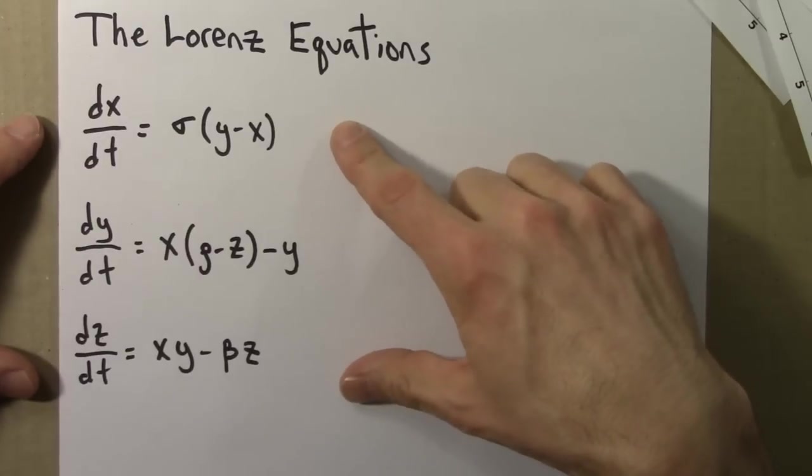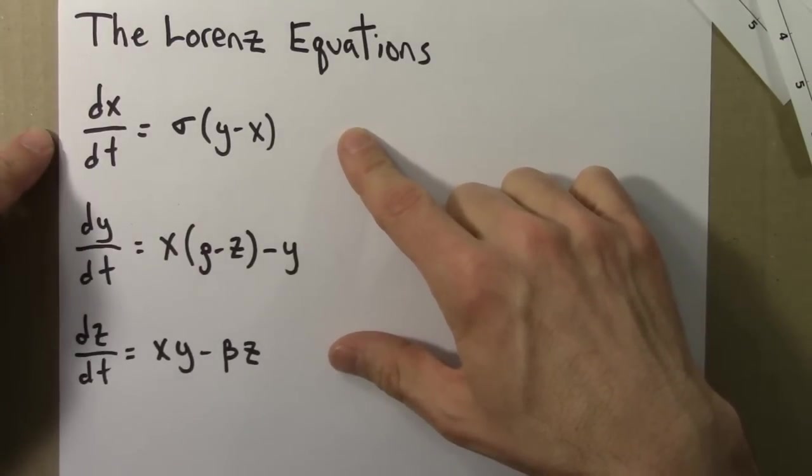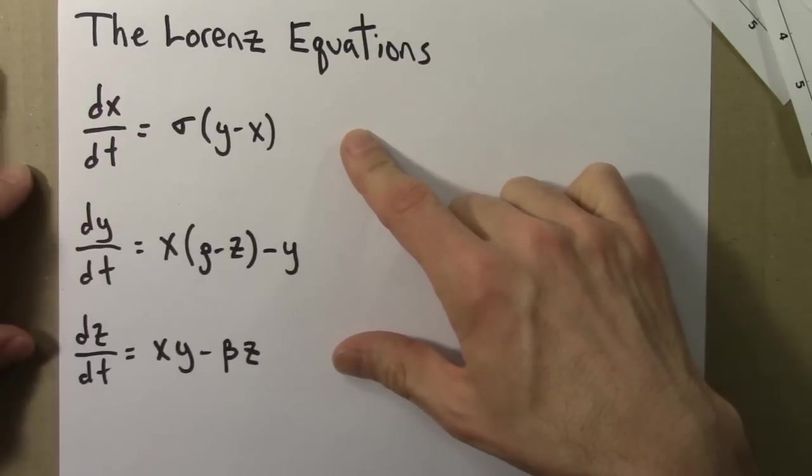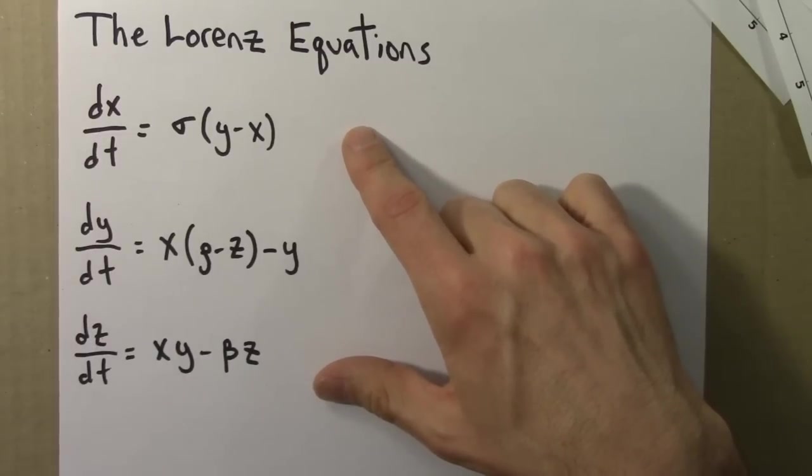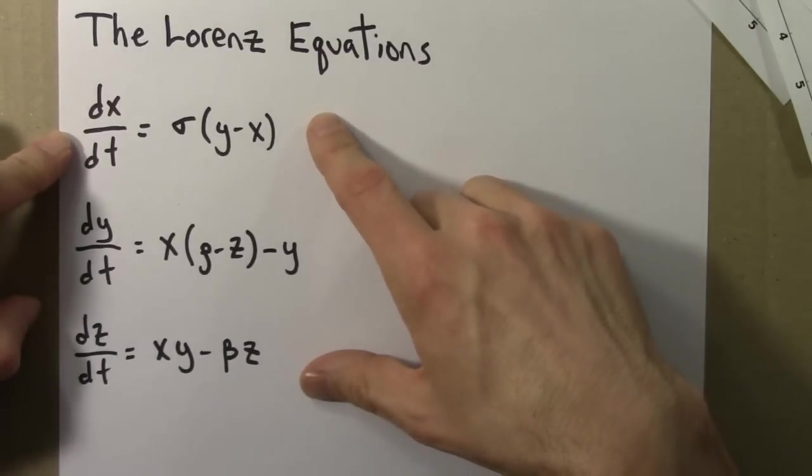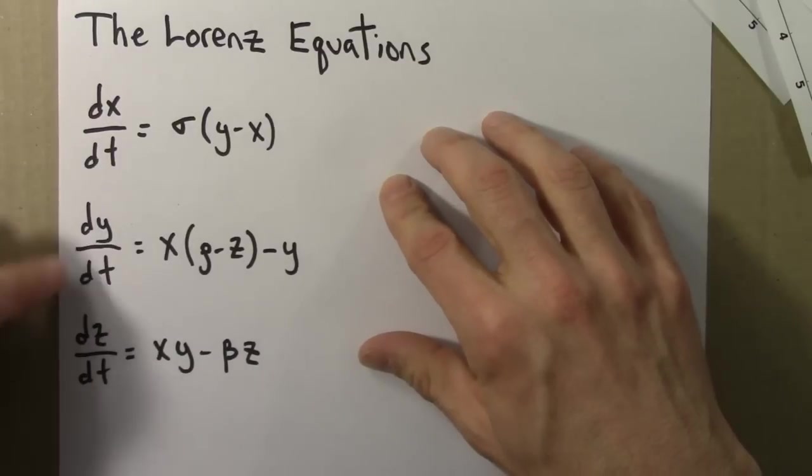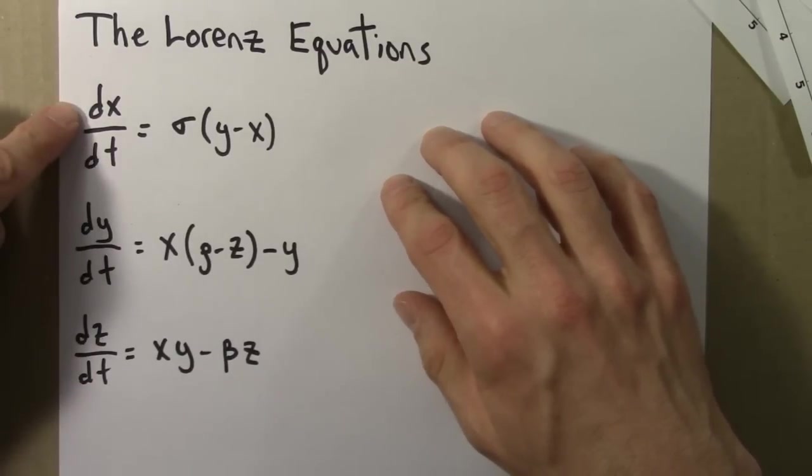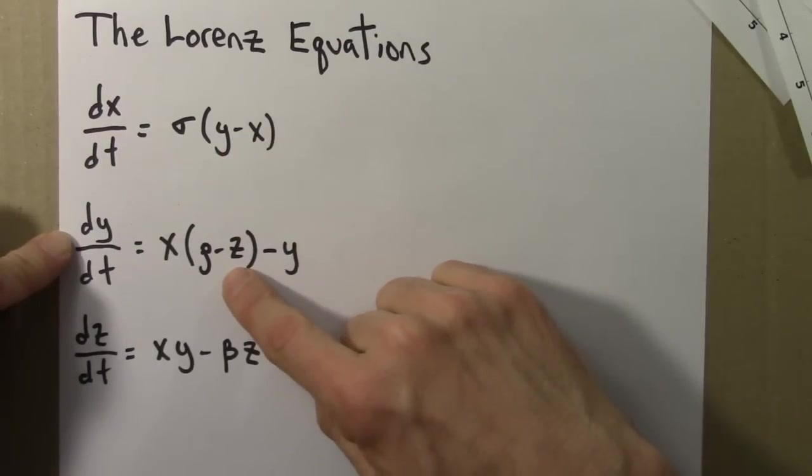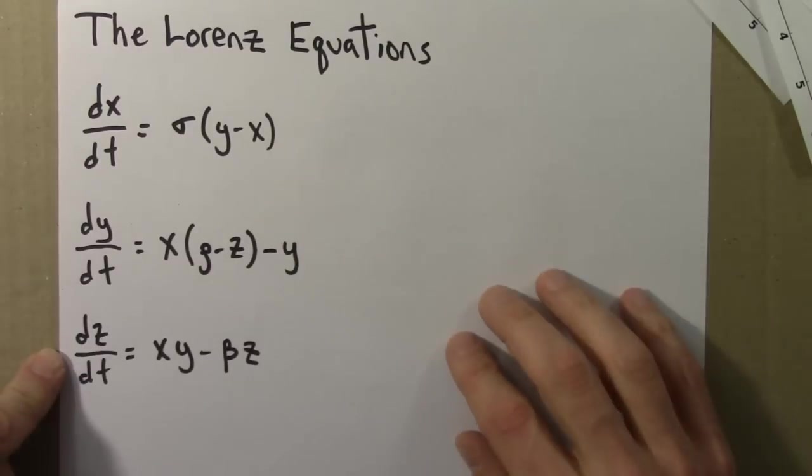And this is a deterministic dynamical system, just like all the ones we've studied before. Now we have three variables: x, y, and z. And given an initial condition, an x, y, z point, the future path of this point is determined by these equations. These directions tell x, y, and z what to do. And these three equations are coupled because, for instance, x depends on y, y depends on x and z, and so on. So the evolution of these three variables are all related.